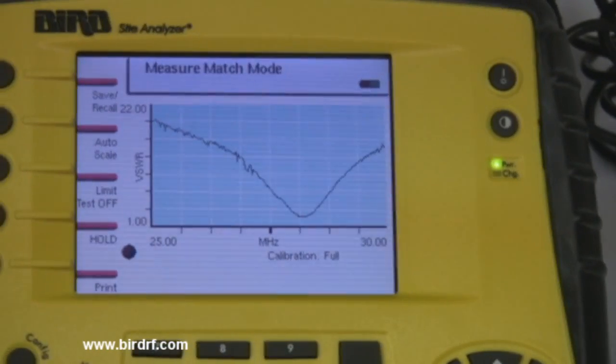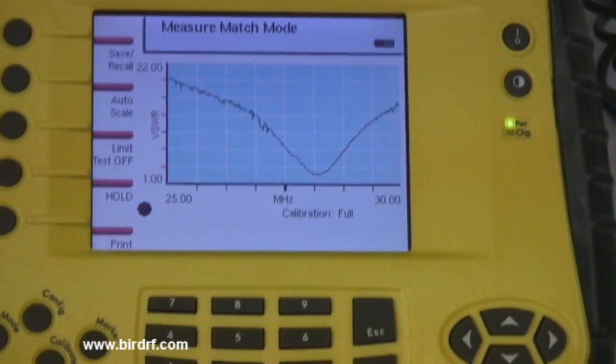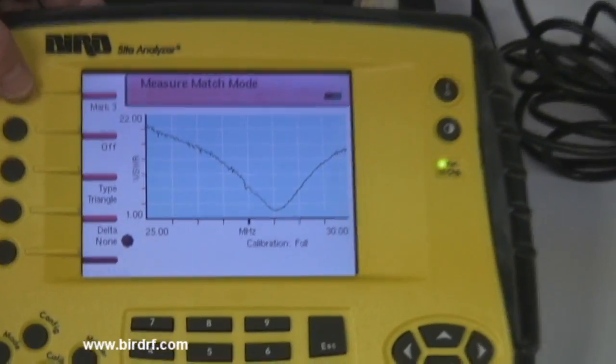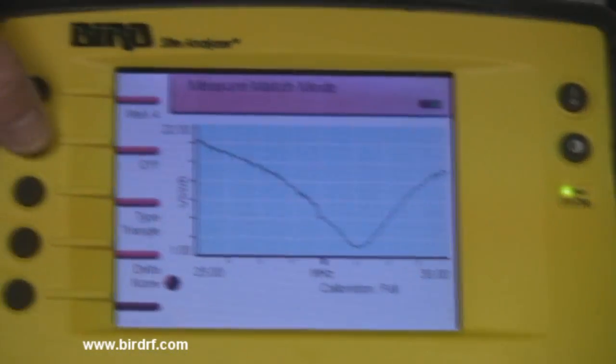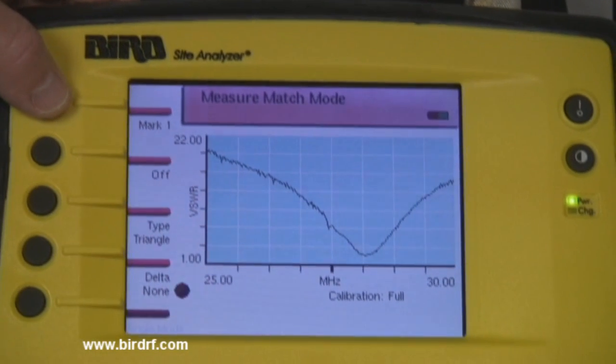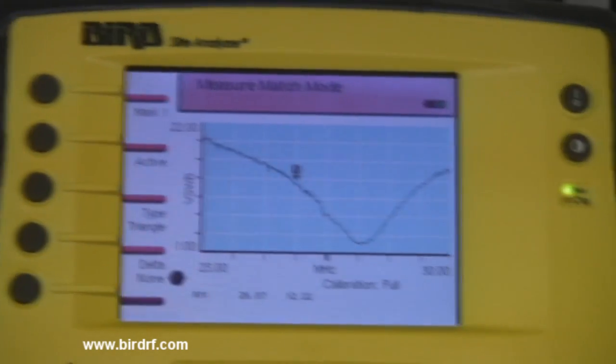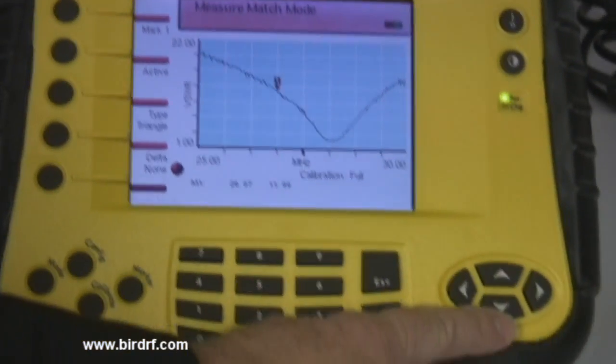To mark the minimum, press the markers mode located in the bottom left corner of the sight analyzer. Press the marker button located on the left hand side of the sight analyzer screen until marker 1 appears on the top button. Then select the active button, the second button down to activate marker 1.